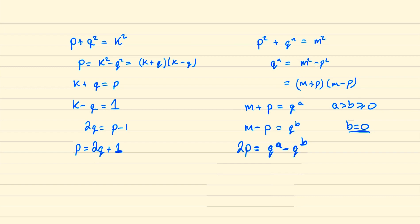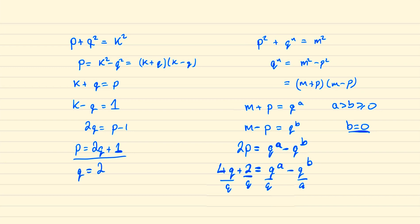We can recall that we discovered p = 2q + 1. Substituting this in gives 4q + 2 = qᵃ - qᵇ. Since all three terms are divisible by q, it follows that q must also divide 2, and since q is prime it follows that q = 2 and hence p must equal 5.